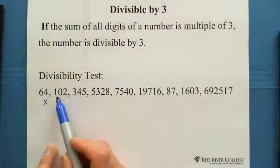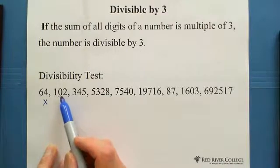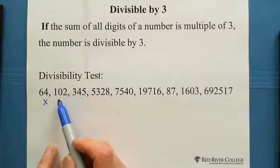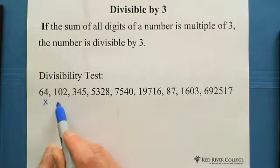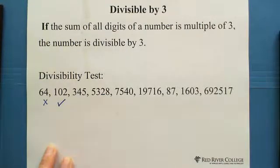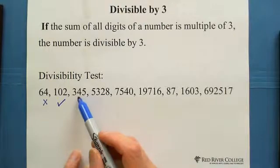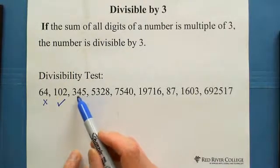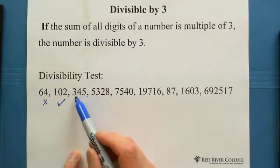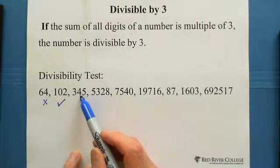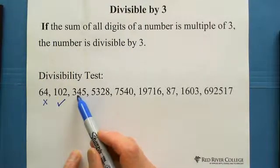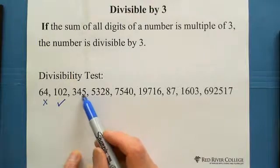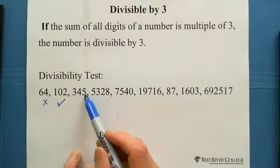For 102: 1 plus 0 plus 2 equals 3 — that one works. For 345: 3 plus 4 equals 7, and 7 plus 5 equals 12.